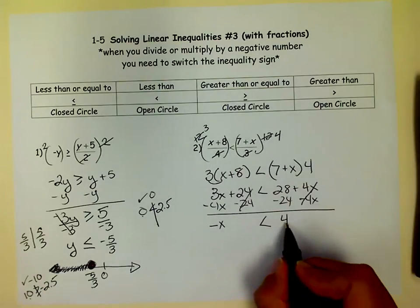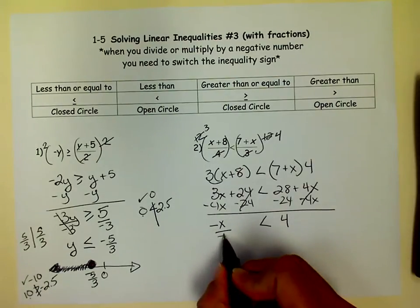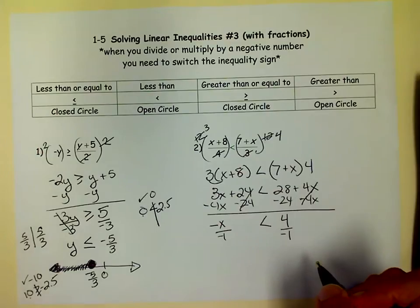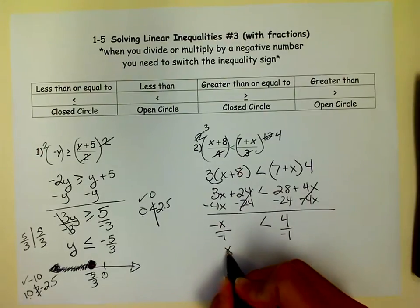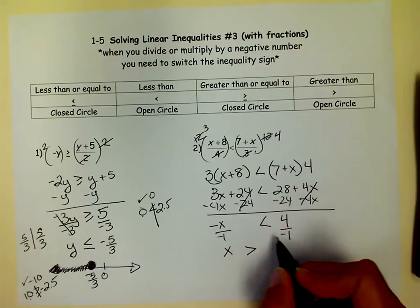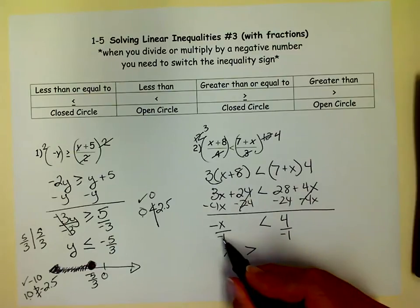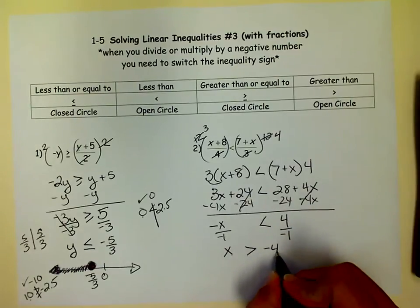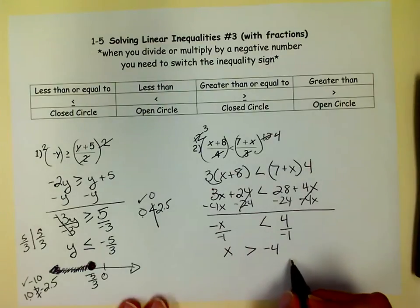Now the opposite of x is less than 4. So I'm going to have to divide by negative 1 to get rid of that negative x. And when I do, I get an x. And hopefully the bell went off. And you said, oh, we've got to switch the inequality sign because we divided by a negative. So now I know that x is greater than negative 4.